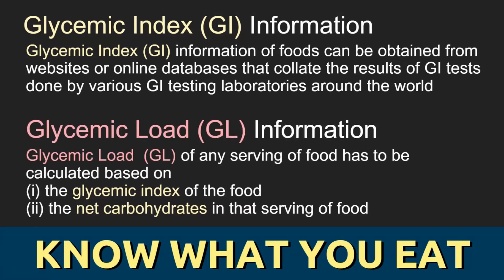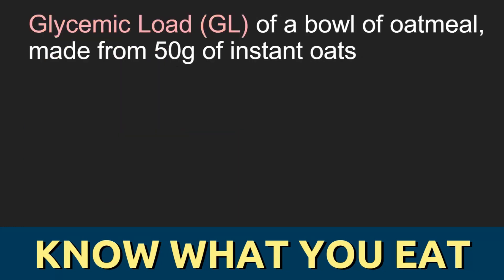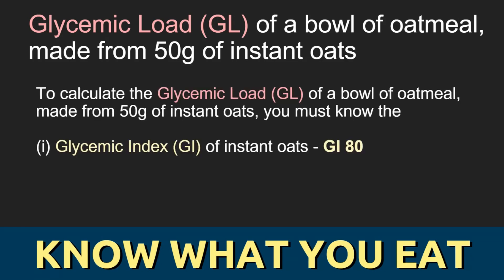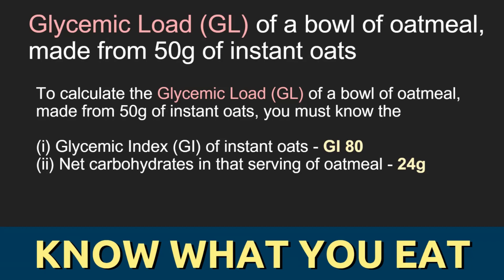On the other hand, if you want to know the glycemic load of a particular serving of food that you're eating, you have to calculate it, provided you know the glycemic index of the food and also the net carbohydrates in that serving. For example, if you want to calculate the GL or glycemic load of a bowl of oatmeal made from 50 grams of instant oats, you will first need to know the GI of instant oats which, based on various databases online, is around 80. Secondly, you will also need to know the net carbohydrates in grams in that serving, which in this case is about 24 grams.